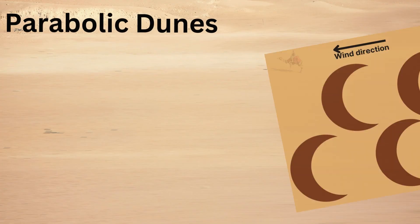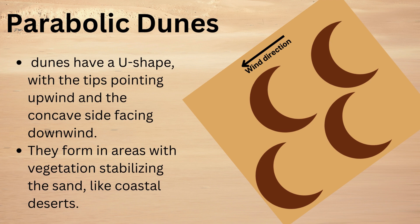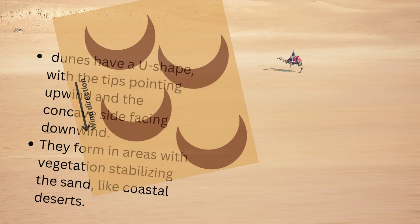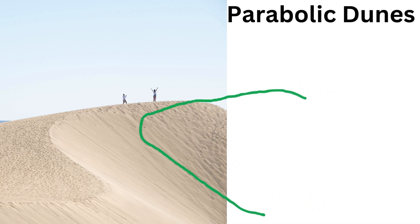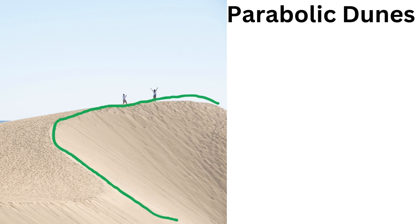Next one is parabolic dunes. These dunes have a U-shape with the tips pointing upwind and the concave side facing downwind. They are common in areas with vegetation stabilizing the sand, like coastal deserts. Here in this image you can see the U-like formation and the wind direction too.